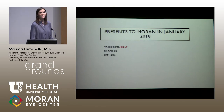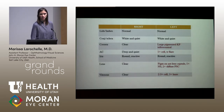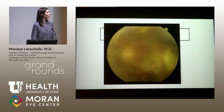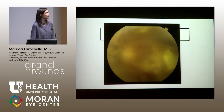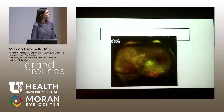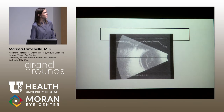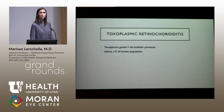When she presented to us, her vision had declined to light perception only with 2+ APD, mild anterior chamber inflammation, diffuse PSC cataract from the intravitreal steroids, diffuse vitritis, multiple confluent areas of retinal whitening, a vessel that looked elevated with subretinal fluid, and a retinal detachment on ultrasound.